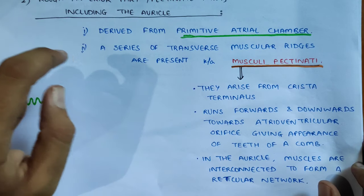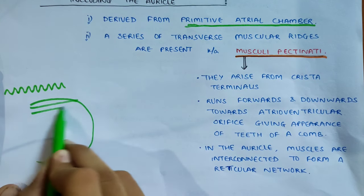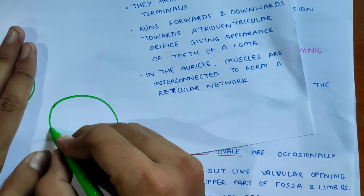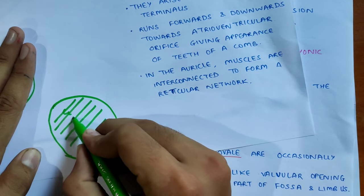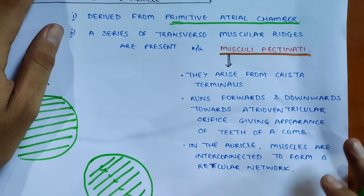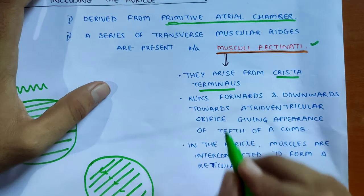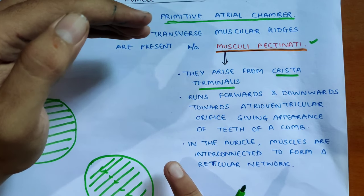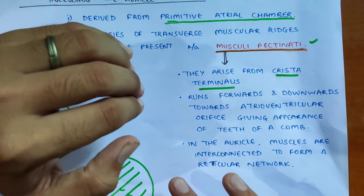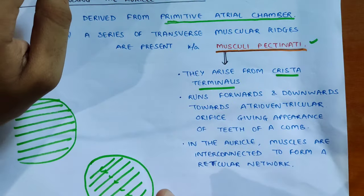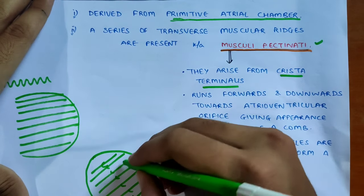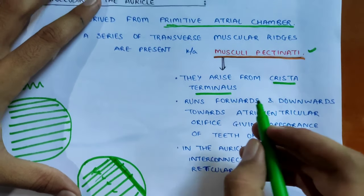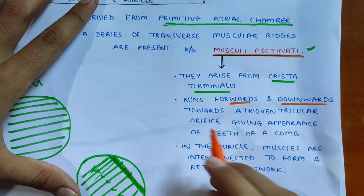There is a series of transverse muscular ridges present in the right atrium, running forwards and downwards, known as musculi pectinati. They arise from the crista terminalis. Externally, between the superior vena cava and inferior vena cava, there is a groove called the sulcus terminalis, and on the inside there is a ridge called the crista terminalis. The musculi pectinati arise from the crista terminalis and run forwards and downwards towards the atrioventricular orifice.